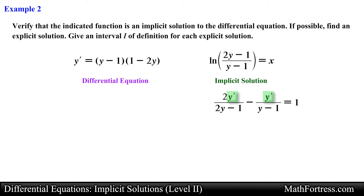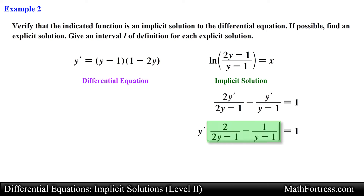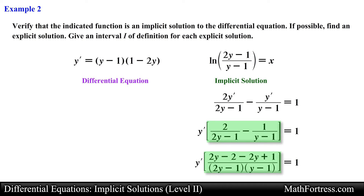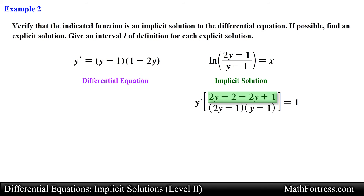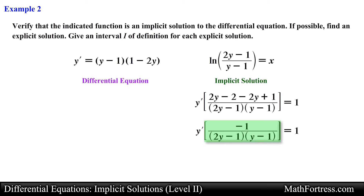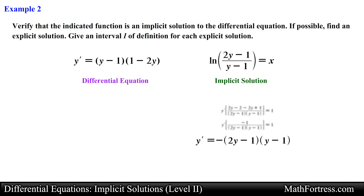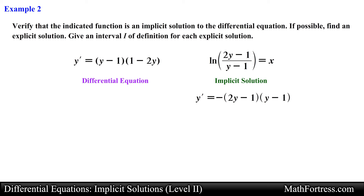Next we need to solve for the first derivative y', so we go ahead and factor out this term. Then we add the fractions by finding a common denominator and rewriting the numerators accordingly. Next let's simplify the terms in the numerator, and finally multiply both sides of the equation by the reciprocal of the expression inside the bracket. Doing this we obtain the following expression for the derivative. After that, let's substitute this expression into the differential equation and verify that both sides match.